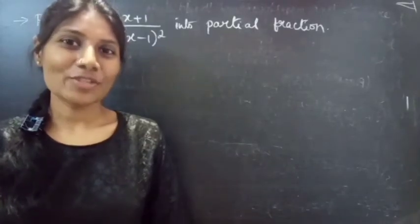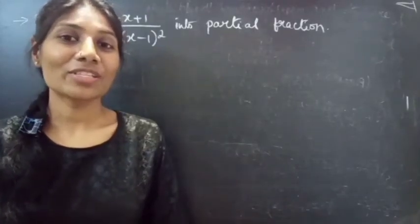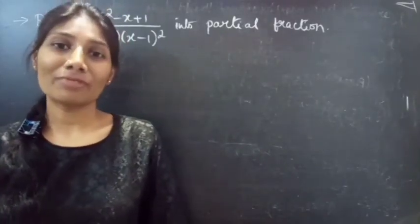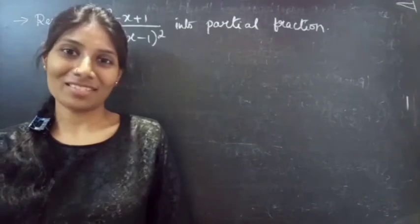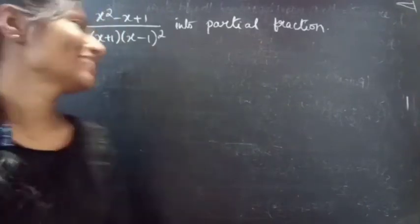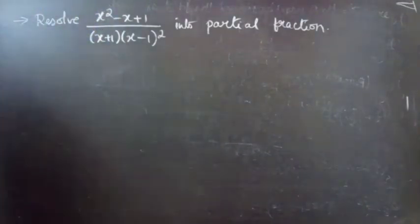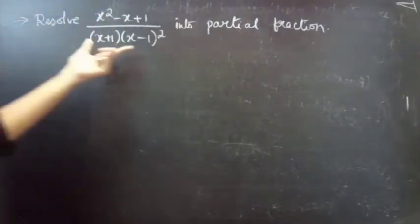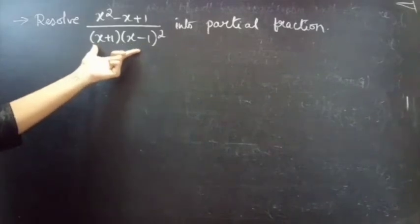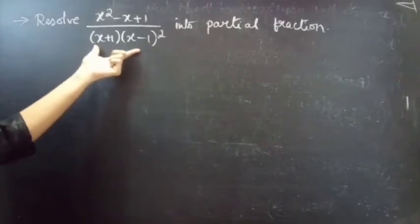Hello everyone, this is Zekalpna here. In this video we are going to discuss a problem from partial fractions. Let's get started. The problem is to resolve x² - x + 1 by (x+1)(x-1)² into partial fractions.